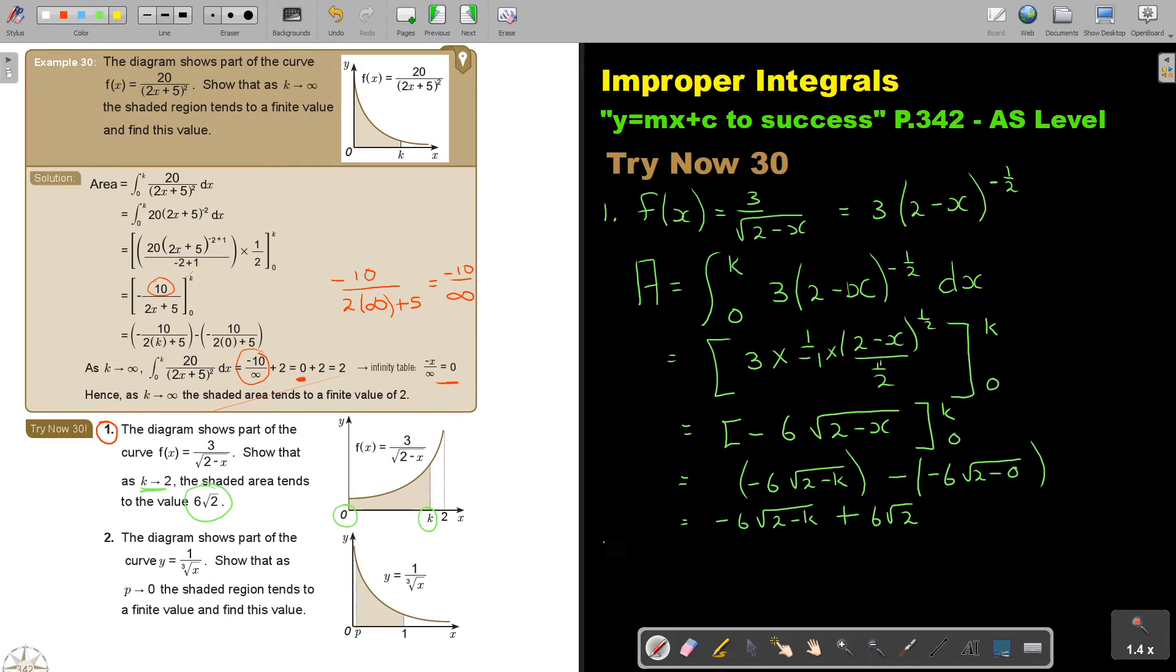But now I am going to say as k is driving to 2, I'm just going to substitute there. Negative 6 times 2 minus 2, which is 0. I can put the whole step. That's going to be 0. So that is going to be 0 plus 6 square root 2, which they gave me there.